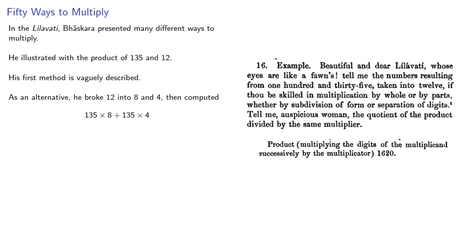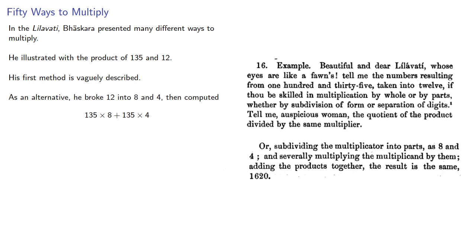As an alternative, he broke 12 into 8 and 4, and computed the product 135 times 8, to which he added 135 times 4.